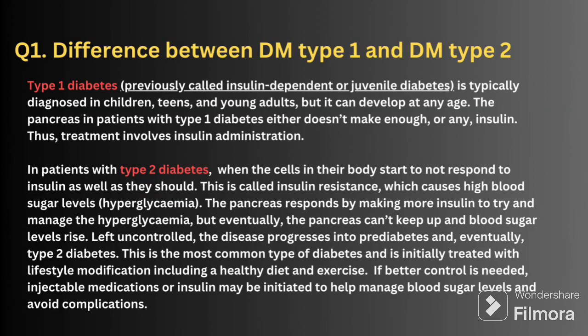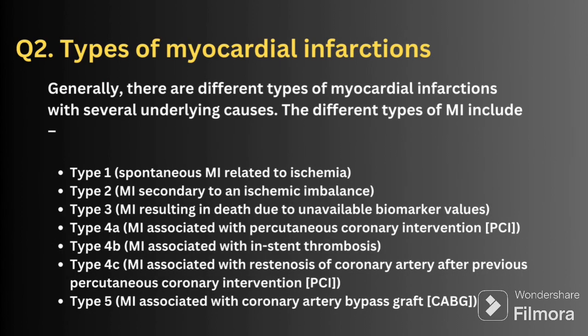The first question is: what is the difference between Type 1 and Type 2 diabetes? Type 1 is otherwise called insulin-dependent or juvenile diabetes, and it usually occurs in children. The pancreas in a patient with Type 1 diabetes does not make enough insulin, so the patient becomes insulin-dependent. In Type 2, called Type 2 diabetes mellitus, the cells are not responding to the insulin — this is called insulin resistance. In simple terms, Type 1 diabetes is juvenile, occurring below 14 years, and Type 2 above 14 years.